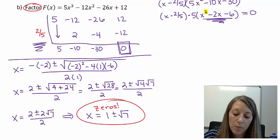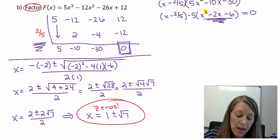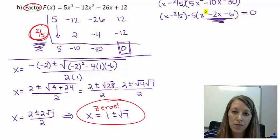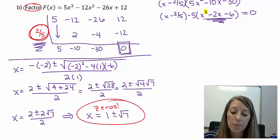So this here are my other zeros. I have zeros of 1 plus √7, I have another zero of 1 minus √7, and then of course the rational zero that we found of 2/5. So now I have answered part A of my problem where it asks me to find the zeros. And now I need to do part B which asks me to factor it completely.